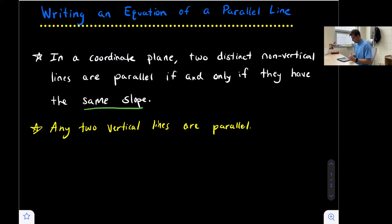Also, any two vertical lines are parallel. We know that a vertical line has an undefined slope, so this is just an extra side note—any vertical lines are parallel.